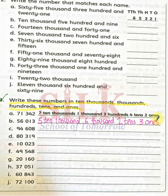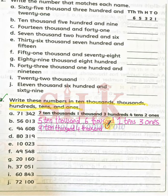Moving to the next question. Here we have 4,000 in the thousands place. Then 600 in the hundreds place. And 8 in the ones place.